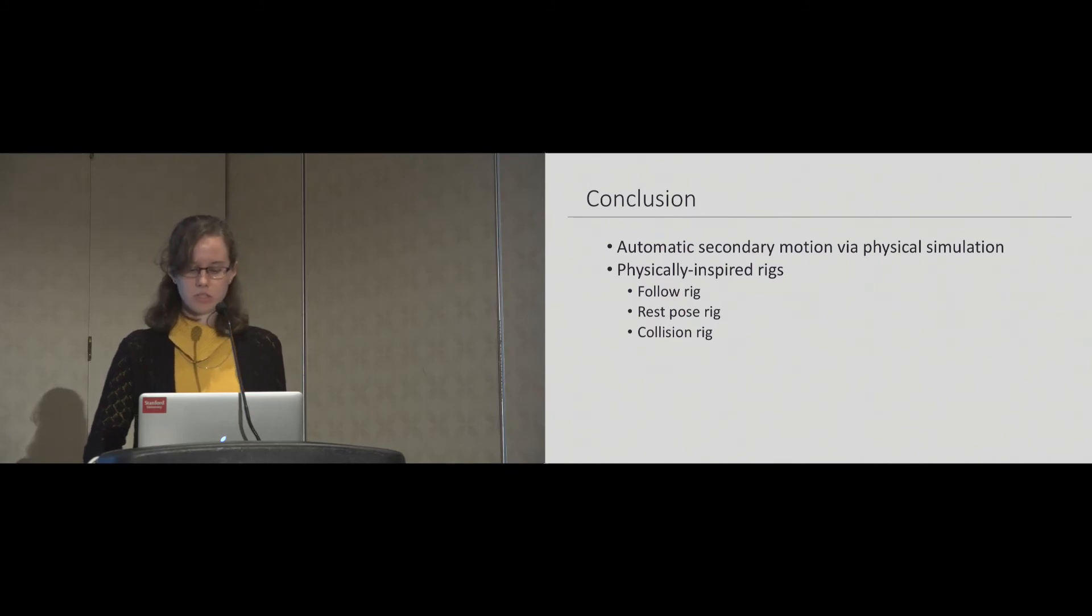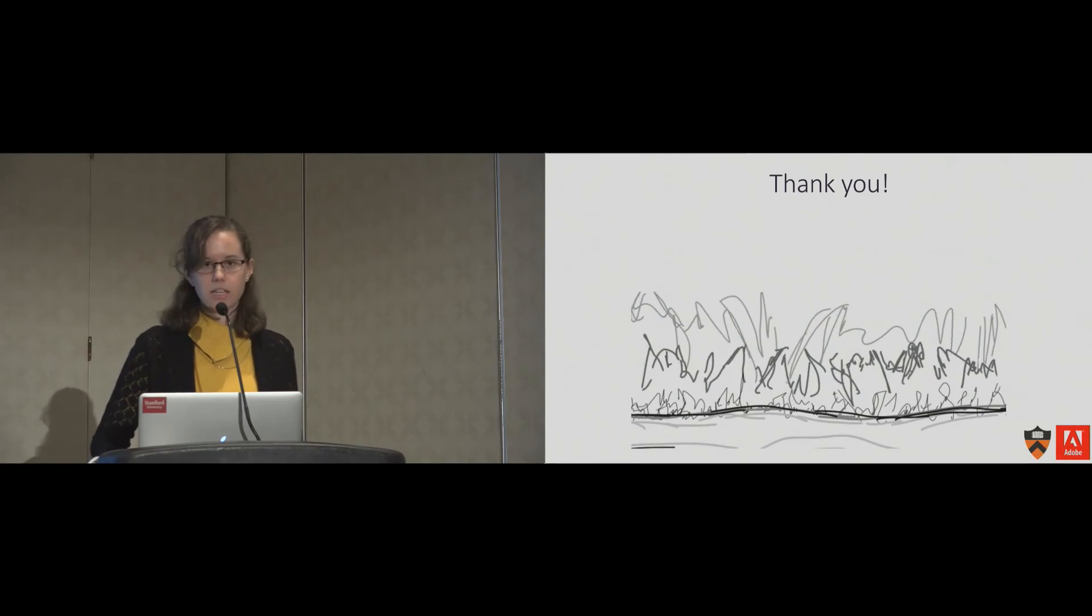We propose a set of tools which allow artists to easily add and manipulate secondary motion on parts of their characters. We built these tools on top of common physical primitives such as springs, pivots, and bodies with masses that most physical simulators already support. Our proposed rigs enable novice and experienced animators to add extra richness to their characters, enhancing the live performances that those characters star in. Thank you for your attention.